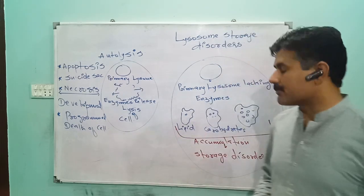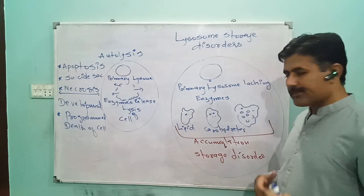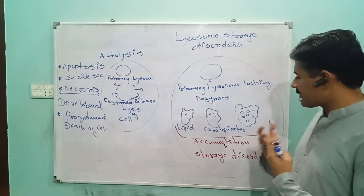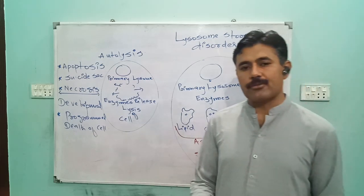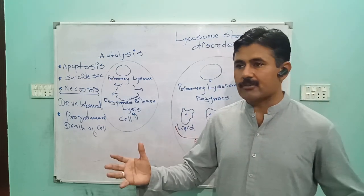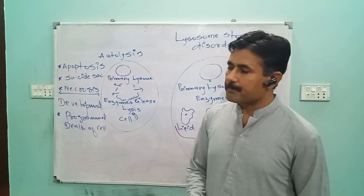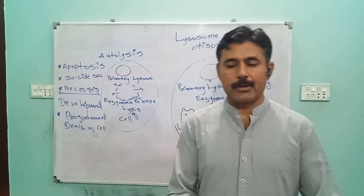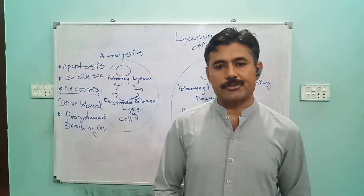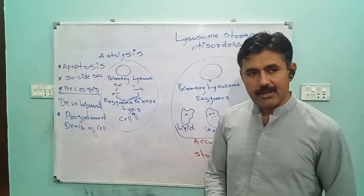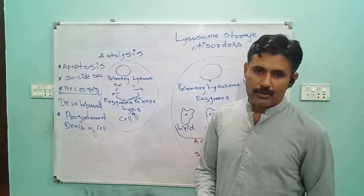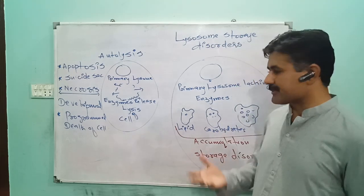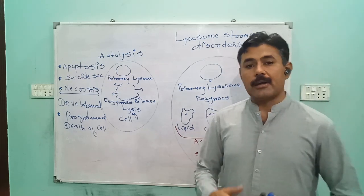When enzymes are absent in lysosomes, they cannot carry out intracellular digestion. Food then starts accumulating inside lysosomes in the form of lipids or carbohydrates, causing lysosomes to enlarge in size. This alters the functions of cells. When cell functions are disturbed, cells collectively make tissues, tissues make organs, and that collectively affects organ function. When organs are not performing their functions, it results in major problems and diseases — termed lysosomal storage disorders.